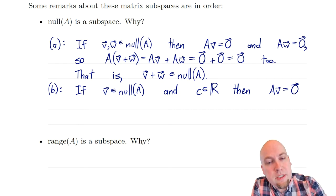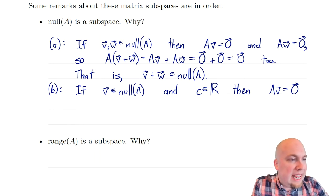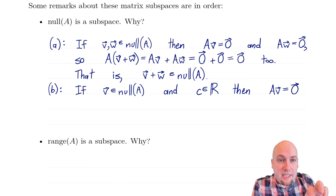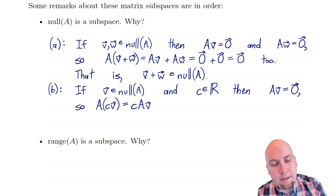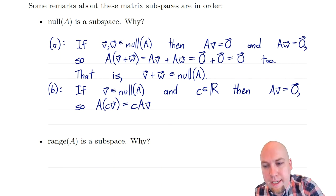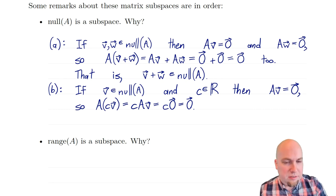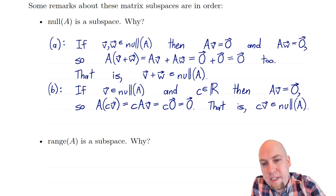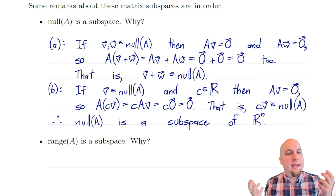For scalar multiplication: if V is in the null space, then AV equals zero. We want to show A times cV also equals zero. Since scalars commute with multiplication, A times cV equals c times AV equals c times zero, which is still the zero vector. So cV is in the null space. The null space is closed under vector addition and scalar multiplication, so it really is a subspace of the input space.